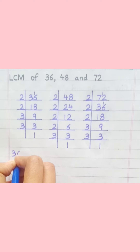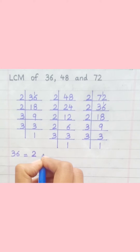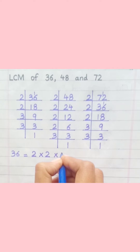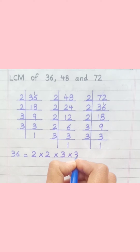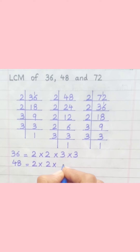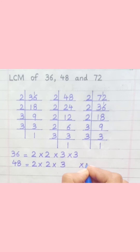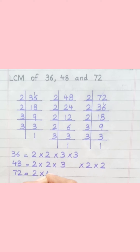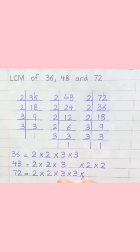36 equals 2 multiply 2 multiply 3 multiply 3. 48 equals 2 multiply 2 multiply 3 multiply 2 multiply 2. 72 equals 2 multiply 2 multiply 3 multiply 3 multiply 2.